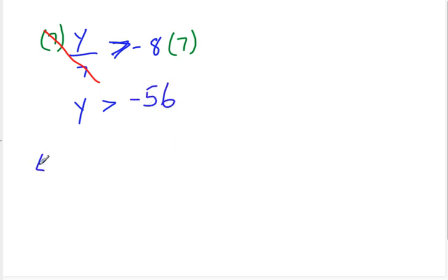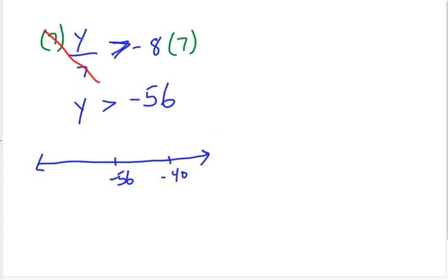If we're going to graph that, let's show two different numbers. We'll have negative 56 here and maybe negative 40 here — any number really. To graph it, open circle at negative 56, and it's greater than, so we're shading to the right.